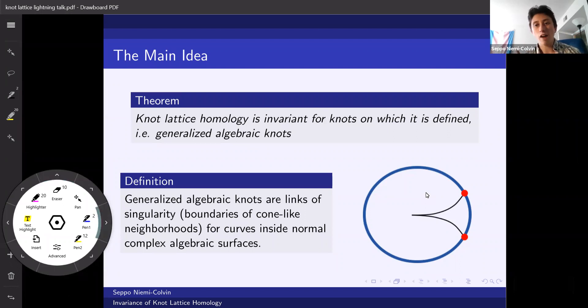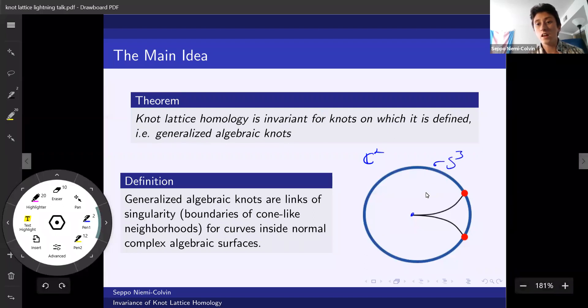The picture we have on the right is for an algebraic knot, where the normal complex surface is C2, and we have a complex curve inside it with a singularity which we can assume is at zero, and we can look at where that curve intersects S3, which gives us the algebraic knot. Note that we also can have algebraic links, but we care specifically in this case about when they are knots.